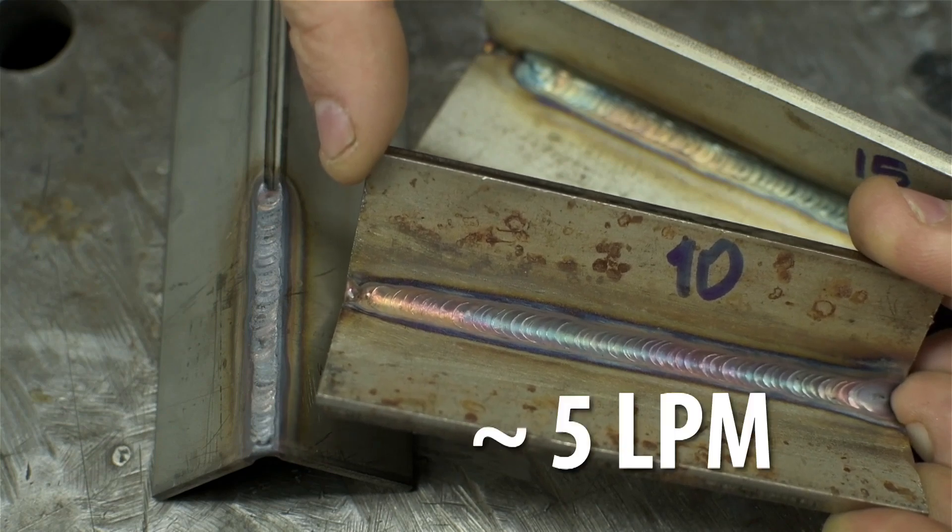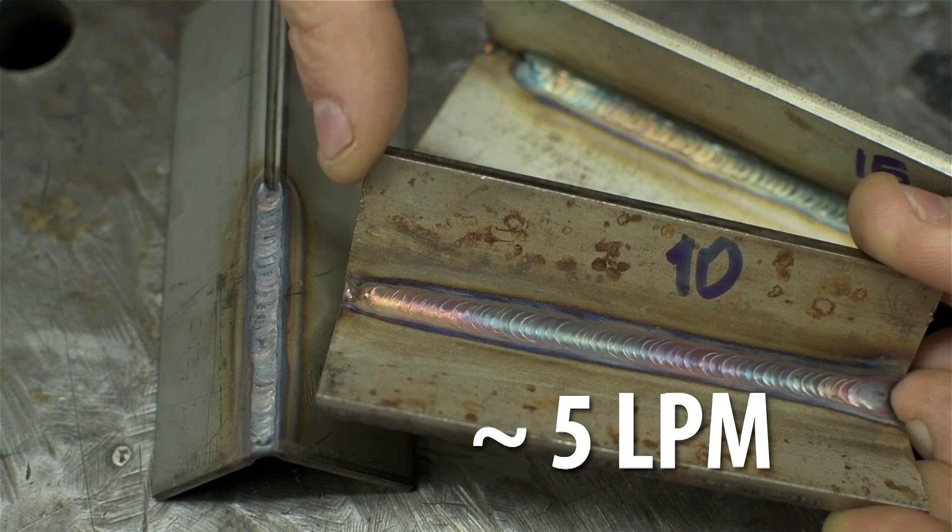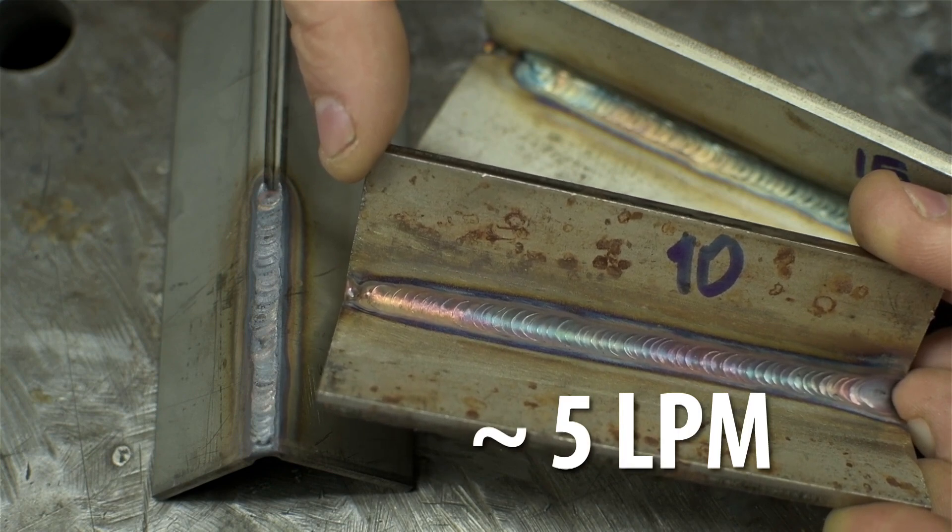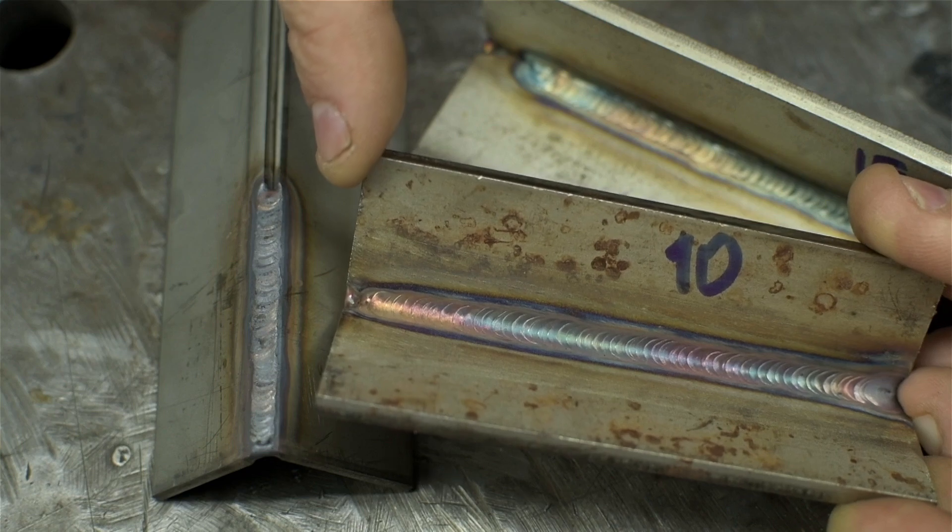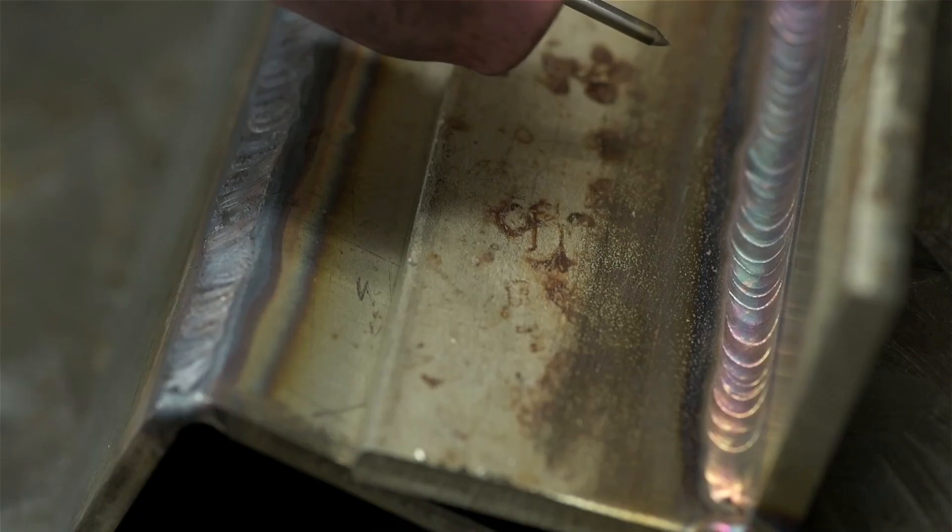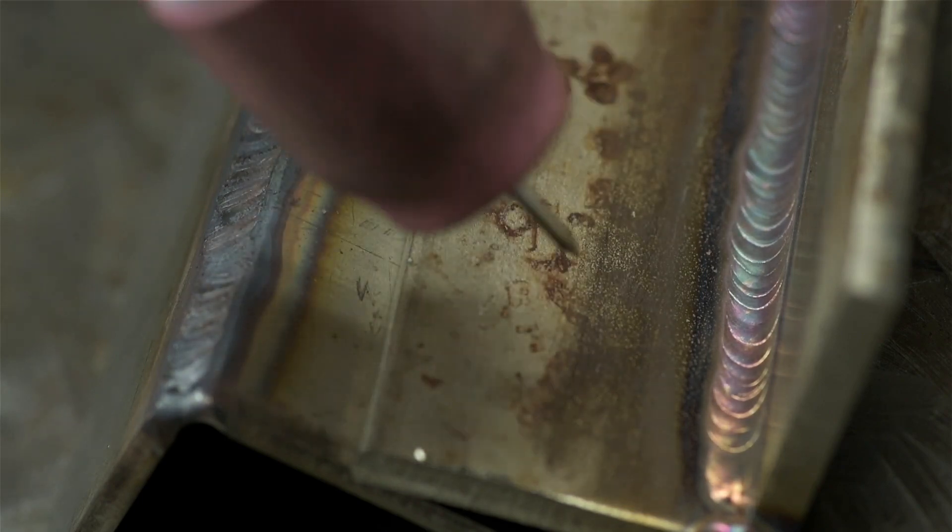These two welds are both run at the same flow rate, again 10 cfh, and pretty much spot on for a number 8 cup and gas lens combo. So why the big difference? Why is one bright and shiny and the other one so dull?